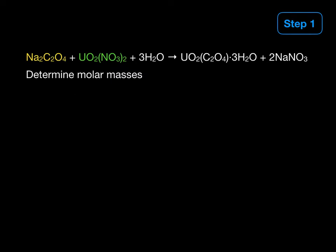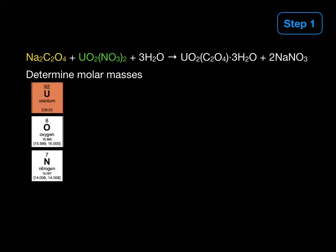In the same way, we will calculate the molar mass of uranyl nitrate highlighted in green. This is composed of the elements uranium, oxygen, and nitrogen. Pay close attention as we look at the subscripts in this formula. There's one uranium.